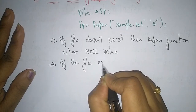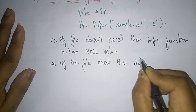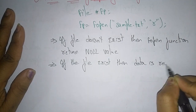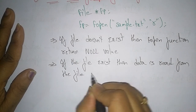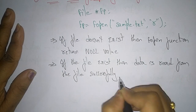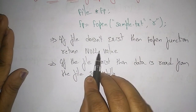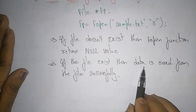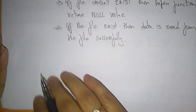Suppose the file already exists — if the file exists, then data is read from the file successfully. Reading only reads whatever is there in the file; it does not erase the data or copy the data elsewhere. So if the file does not exist it returns NULL, and if the file exists then data is read from the file.